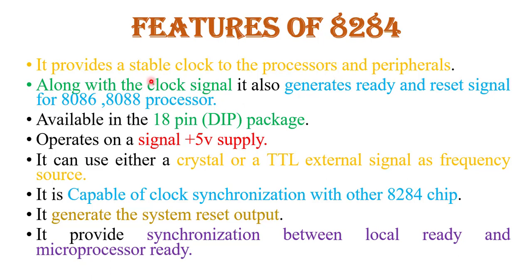The features of the 8284 clock generator: it produces a stable clock signal for the 8086 or 8088 microprocessor and other peripheral devices. Along with the clock signal, it also generates ready and reset signals for the 8086 or 8088 microprocessor. It is available in an 18-pin DIP IC (dual inline package). It operates at plus 5V power supply, and can use an external crystal or TTL external signal as a frequency source. It is capable of clock synchronization with other 8284 chips, generates the system reset output, and provides synchronization between local ready and microprocessor ready.